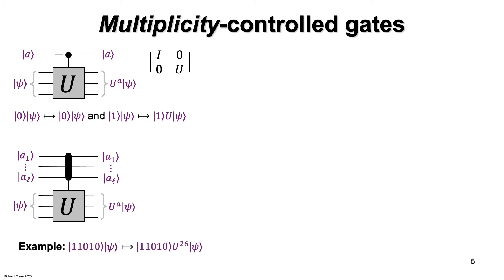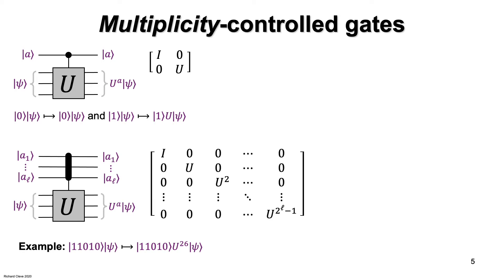For example, if l is 5 and the control qubits are in state ket-1-1-0-1-0, then U gets applied 26 times. Why 26? Because 1-1-0-1-0 is the number 26 in binary. This is what the unitary matrix of this kind of controlled-U gate looks like: the blocks along the diagonal are powers of U — identity, U, U squared, U cubed, all the way up to U to the power 2 to the l minus 1.